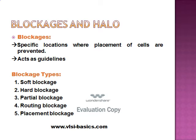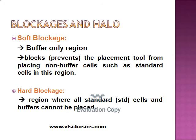Blockages are divided into the following types: soft blockage, hard blockage, partial blockage, placement blockage, and routing blockage. A soft blockage specifies a region where only buffers can be placed — standard cells cannot be placed in this region. It blocks the placement tool from placing non-buffer cells, which is why it is also called a buffer-only region.